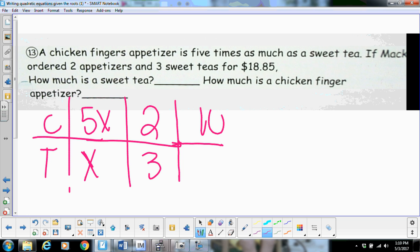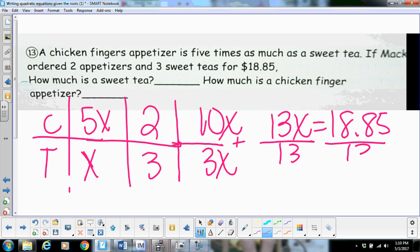You bought two appetizers of chicken fingers and three sweet teas. So multiply that together. That's going to give me ten x and three x. So add those up and thirteen x is going to equal your total of eighteen eighty-five. So you divide by thirteen.